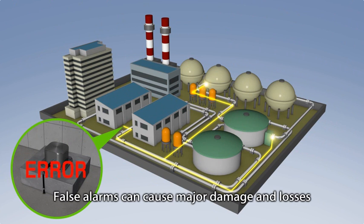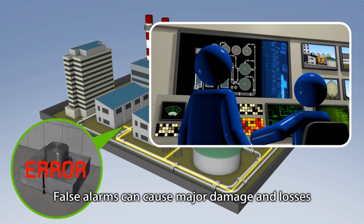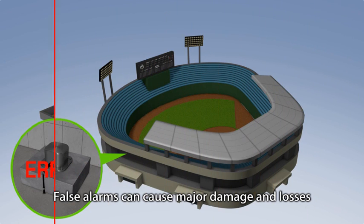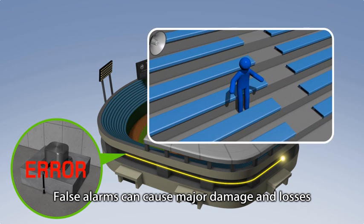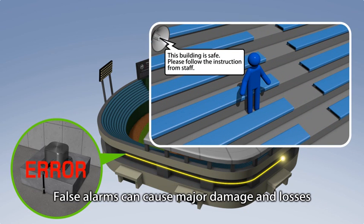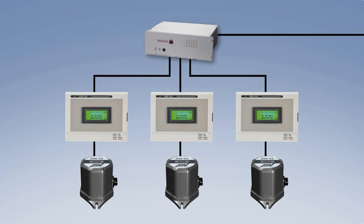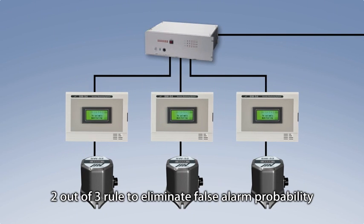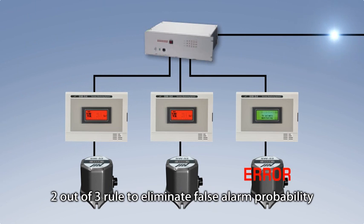False alarms are common problems for early warning systems and poor quality earthquake sensors. A false alarm due to sensor malfunction may lead to premature halting of operations and can cause major losses or even physical damages. A 2 out of 3 rule is necessary for important equipment to avoid false alarms due to malfunctioning. In this rule, the system does not activate controls unless 2 out of 3 sensors detect vibration.